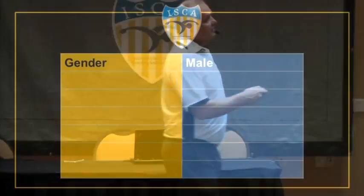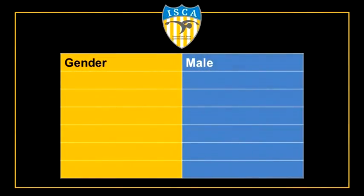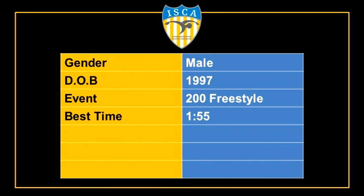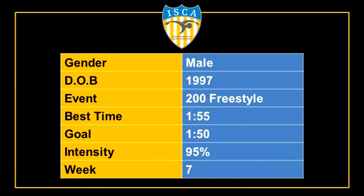We calculate progression of speed from where we are today to where we need to be. In this particular case, I created an example of a male born in '97, 203cm, previous best season time of 1:55, goal of 1:50, beginning intensity of 95% from 1:55, and this is week 7 in his season.